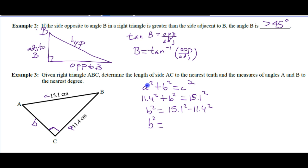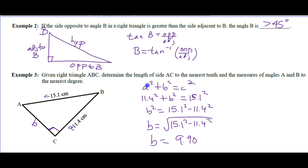We need that to the nearest tenth. B is equal to the square root of this, and B is 9.902, which will be 9.9 centimeters.